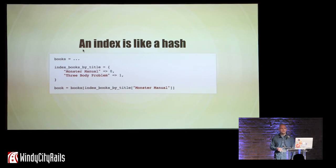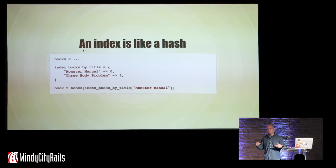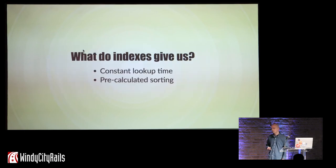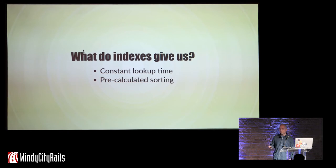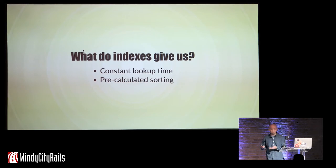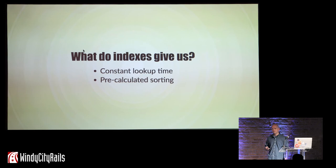An index is, in a lot of ways, like a hash. I've created an index where I have the titles of each book and they point to the index in the array for that book. This is really useful because now I can look up books in constant time. I don't have to loop through 100, 1,000, or 10,000 items to find a specific book — I can just look it up in my hash, get the ID, and pull it out of the array. It also precalculates sorting, because in indices, things are stored in a certain order.